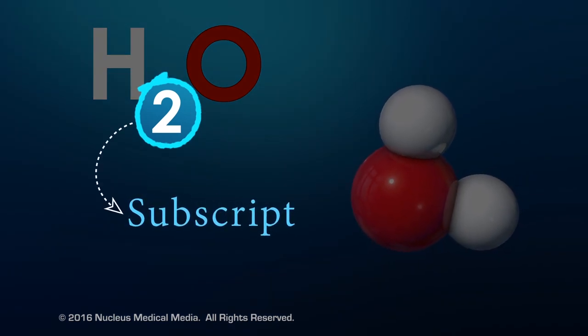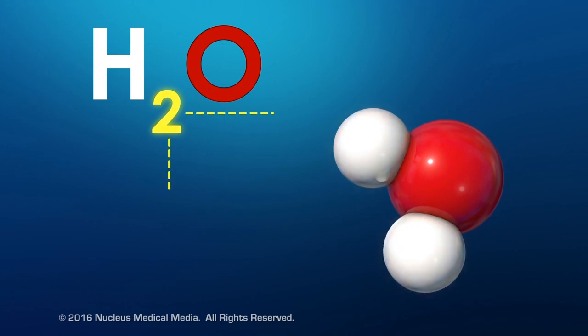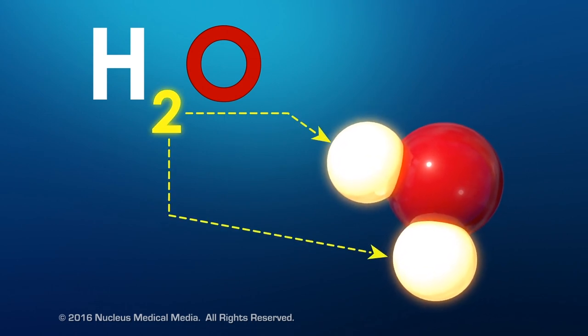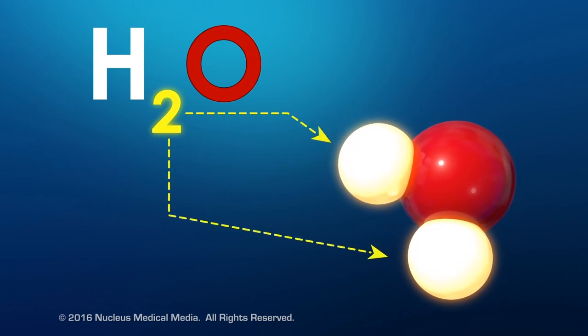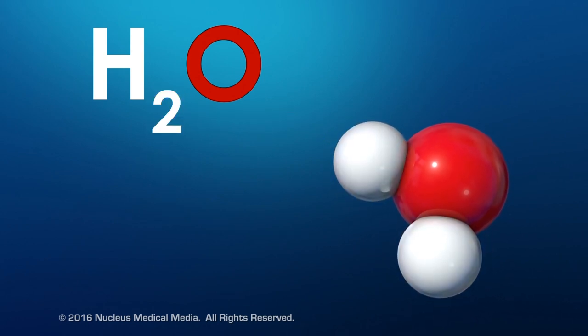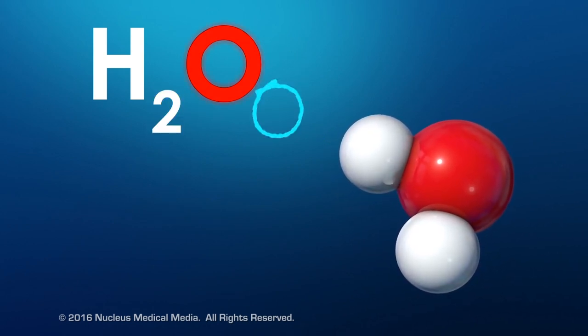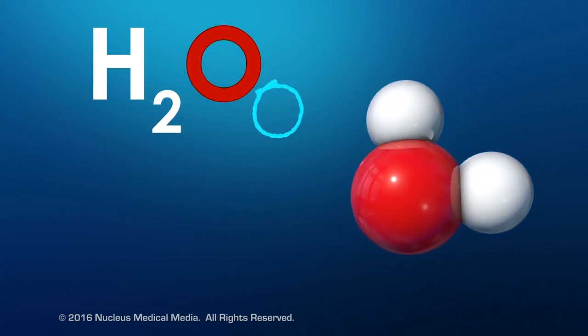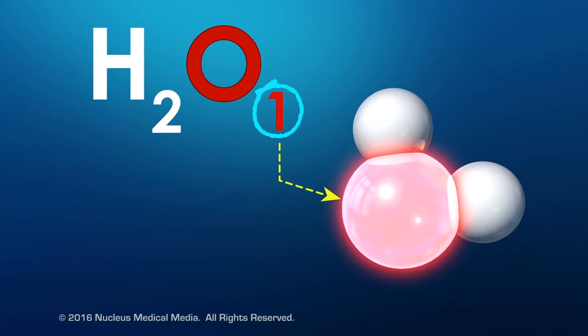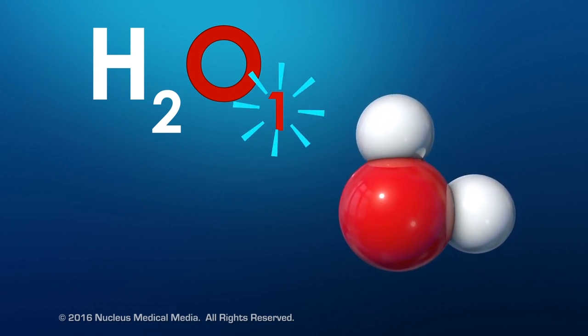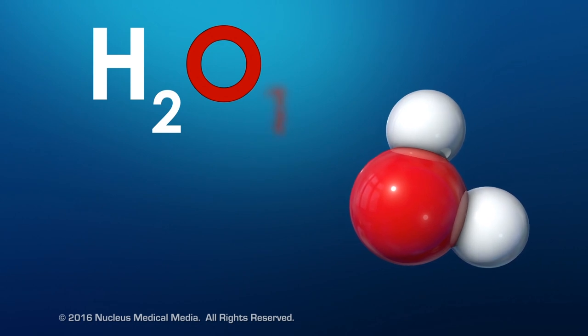A subscript in the chemical formula tells you how many atoms of that element are in one unit of the compound. There's no subscript next to the O for oxygen. That means there's only one oxygen atom. We don't write the one. When there's no subscript, it's understood that we mean one atom.